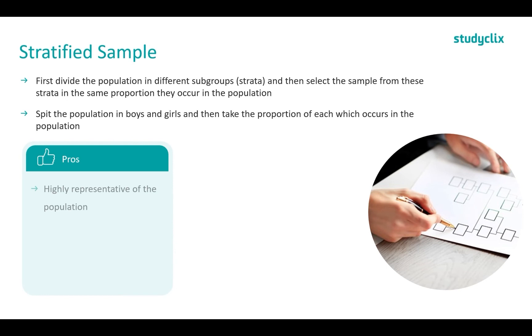The pros is it is a highly representative sample of the population and researchers are also able to compare different groups within the population. So they can compare the results of boys versus girls, older versus younger, because the groups are already formed from the strata.